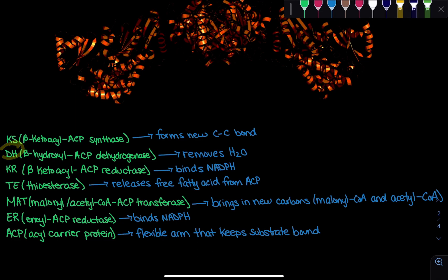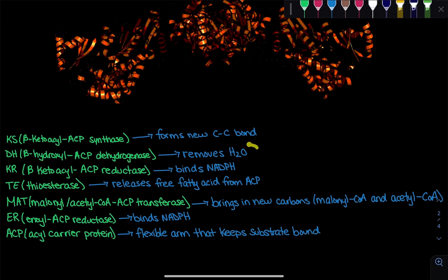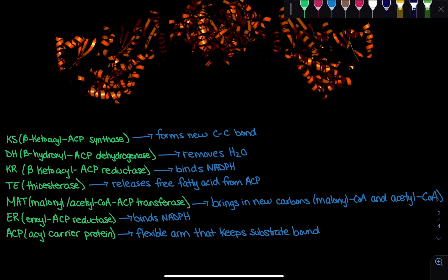Then we have the DH domain — the beta-hydroxyl ACP dehydrogenase — and at this domain we are going to remove H₂O. Recall that we have an intermediate called beta-hydroxyl ACP, and when it is converted into enol ACP, we must remove a water to create that double bond in enol. That happens at the DH domain.